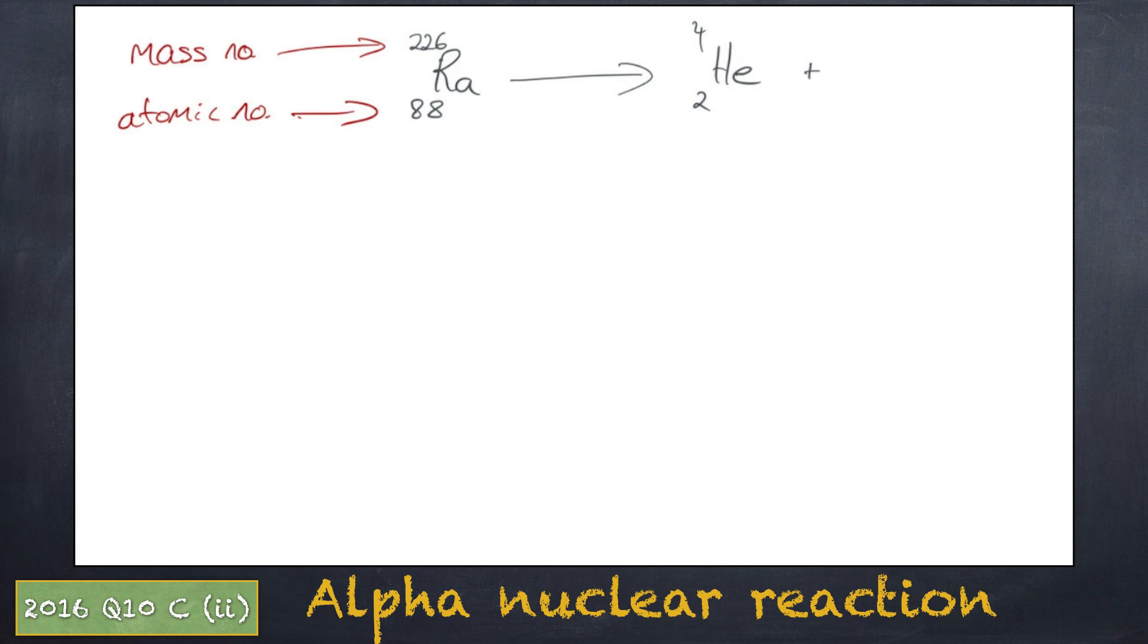We take the mass and atomic numbers from the radium element. And we are left with 222 atomic mass and 86 for the atomic number. Finally, go to the periodic table. Find 86 for the atomic number and record the element. In this case it is radon.